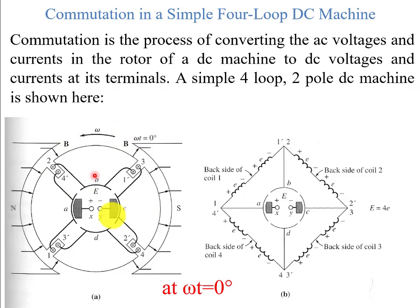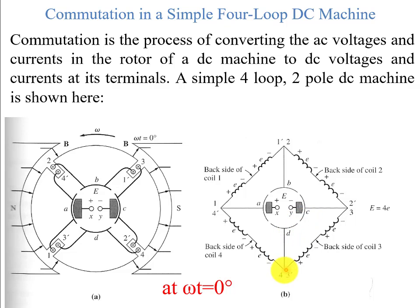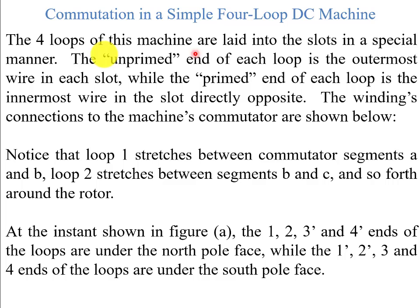The rotor is rotating counter-clockwise. In the circuit form, loop 1 and 1-prime is connected between commutator A and B — this is the back side of the coil, so we are looking at only the front view. Loop 2 and 2-prime is connected between commutator C and B. Loop 3 and 3-prime are connected between commutator C and D, and loop 4 and 4-prime are connected with commutators D and A.